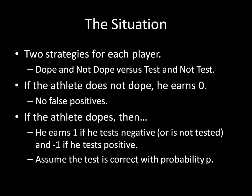The payoffs are as follows. If the athlete does not dope, he earns zero — there are no false positives in this model. If the athlete dopes, he gets one if he tests negative or isn't tested at all, and negative one if he tests positive. We assume the test is correct with probability P, meaning if an athlete takes a performance enhancing drug and gets tested, he tests positive with probability P and gets away with it with probability one minus P.